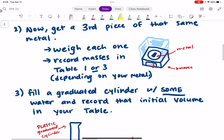The second step is you're going to get a third piece of that same type metal. So if you started with aluminum, you're going to get another piece of aluminum. If you started with iron, you're going to get another piece of iron. You're going to weigh each one, and then you're going to record the masses in either table one or three. That just depends on which metal you have.